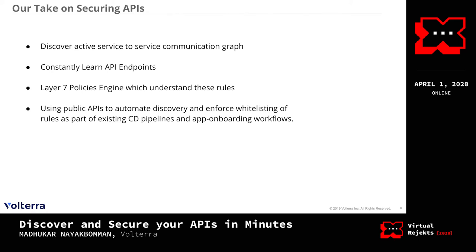As mentioned, manual is definitely not the way. We want to dynamically discover all active service-to-service communication graphs and constantly keep learning API endpoints — understanding what paths and methods are being used between services. You also need a layer seven policy engine that can understand these rules. And you need public APIs to automate the discovery of service-to-service communication graphs and enforcement, so you can integrate with existing GitOps pipelines or app onboarding workflows.